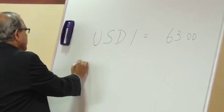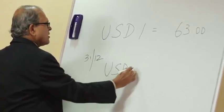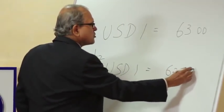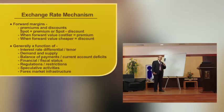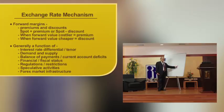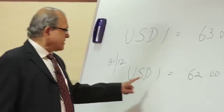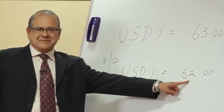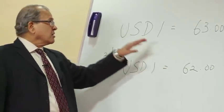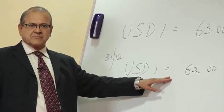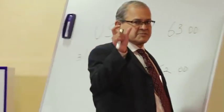Let's look at the same timeframe: USD 1 equals 62. What does this mean? Just the opposite. In the earlier example I had to pay 64 for a US dollar, but now I pay only 62. In the earlier example, the counterparty currency was dearer; in this case the counter currency is cheaper because I have to pay less for the same unit. This is what is called a discount — USD is at a discount to the Indian rupee.